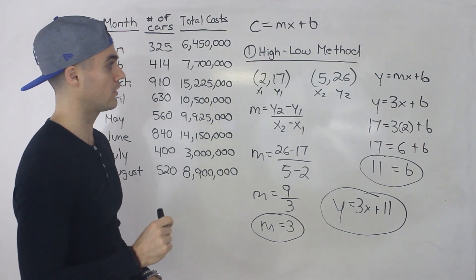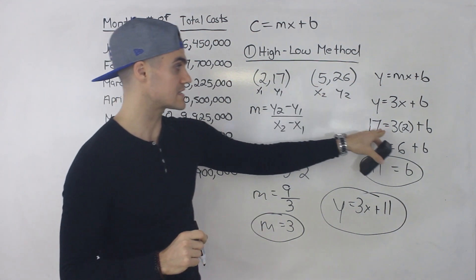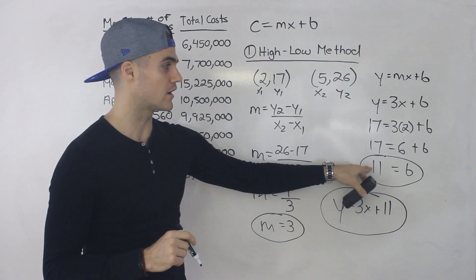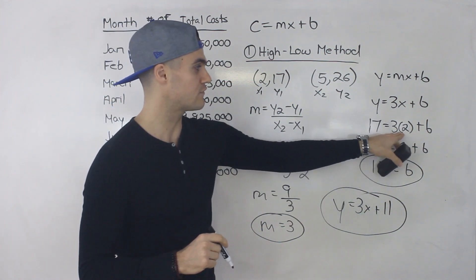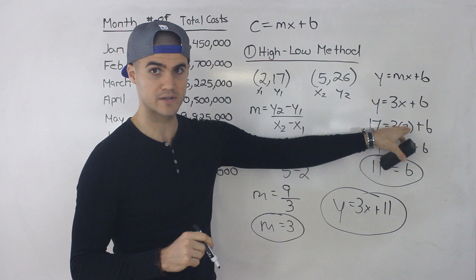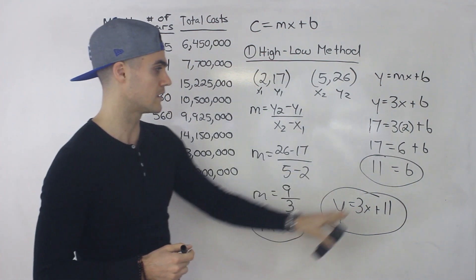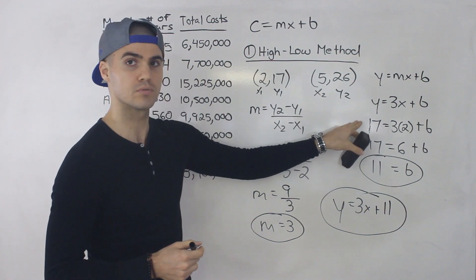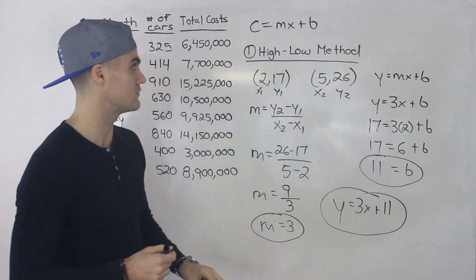One more point: I could have also used (5, 26) to solve for that b value and still would have gotten 11. If I plug in 5 and 26: 26 equals 15 plus b, so 26 minus 15 gives us 11. So it doesn't really matter which point you plug in to solve for that b value.